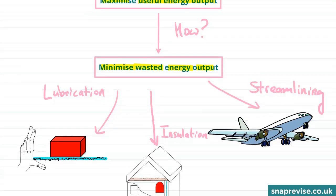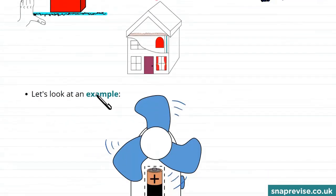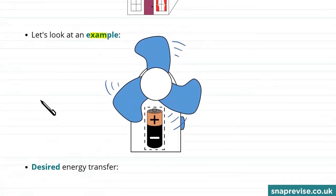So let's take a look at an example of a system whose efficiency we might want to increase. So our example is of a fan. So here is our handheld fan and it's rotating on an axle around the middle.